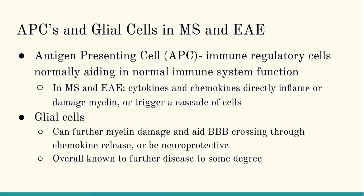Antigen-presenting cells normally help regulate immune function — these are T cells, B cells, and microglial cells. However, in MS and EAE, they release cytokines and chemokines to either directly damage or incite a cascade of cells to damage the myelin, causing disease. Glial cells can further myelin damage and aid in the blood-brain barrier crossing of other APCs, or be neuroprotective. However, they're known to overall further disease to some degree in both MS and EAE.